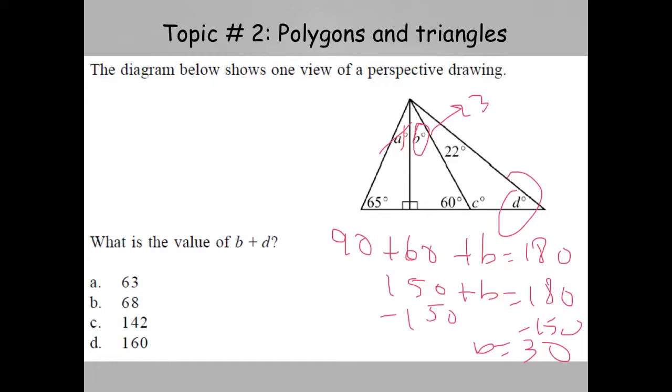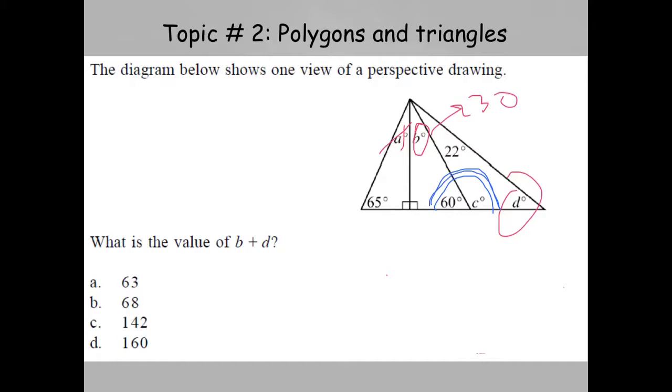Now we need to find d. You should be able to see that angle 60 and angle c form a linear pair, or they make supplementary two angles, because they add up to 180 degrees. If this angle is 60, we can subtract 60 from 180, and whatever is left will be c. C equals 120. That's useful because now that we have c, we know that 22 plus 120 plus whatever d is will give us a total of 180. Subtracting 180 and 142, we get d is equal to 38.